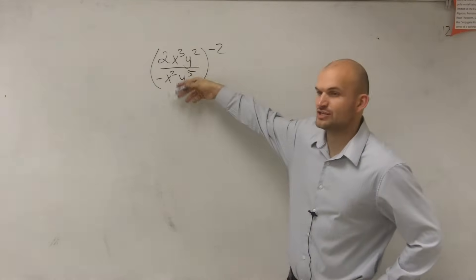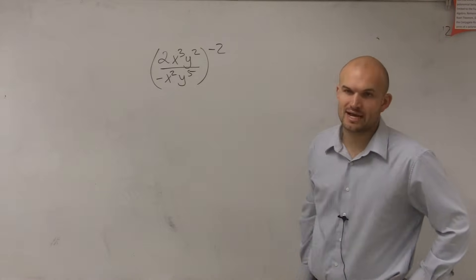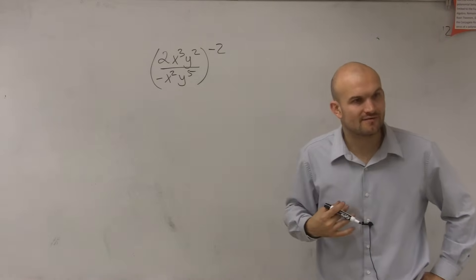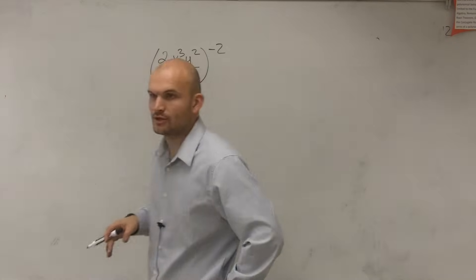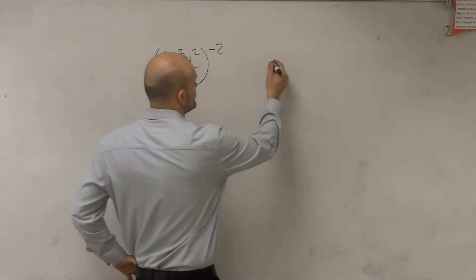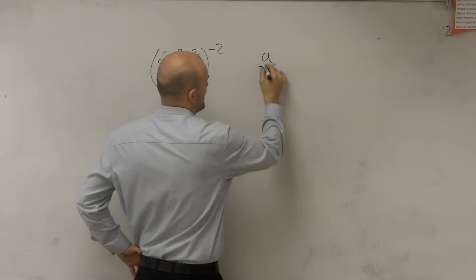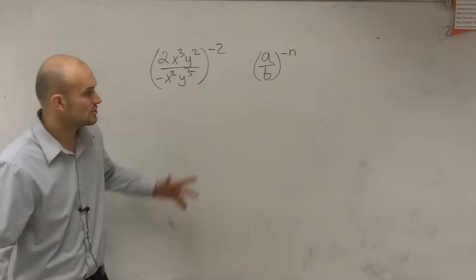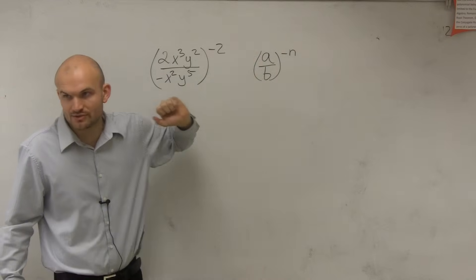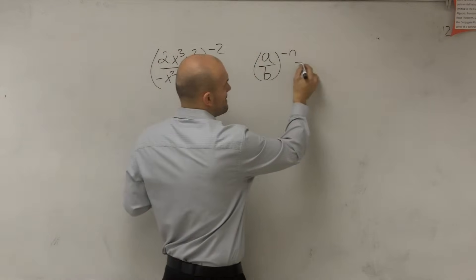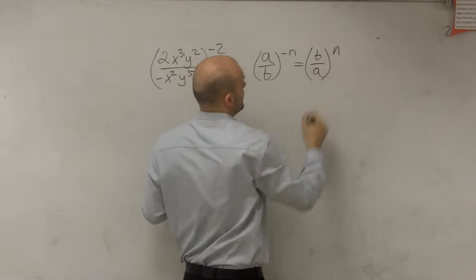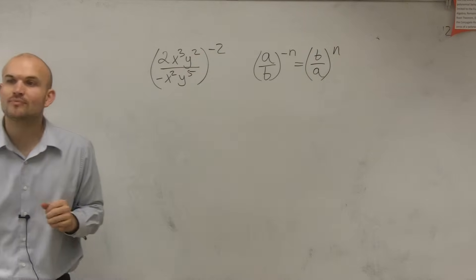Right now, I have a rational expression raised to a negative exponent. So how can I rewrite that so it's a positive exponent? Well, by looking at your property of exponents, you guys should notice that when I have a divided by b raised to a negative exponent, when I have a rational expression raised to a negative exponent, to make that positive, I simply just need to take the reciprocal of that and raise it to a positive exponent.